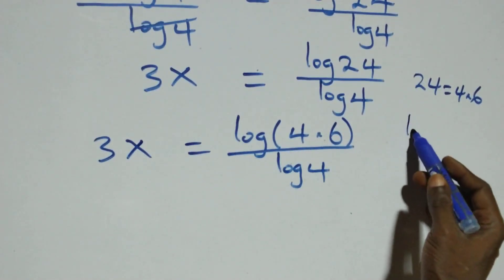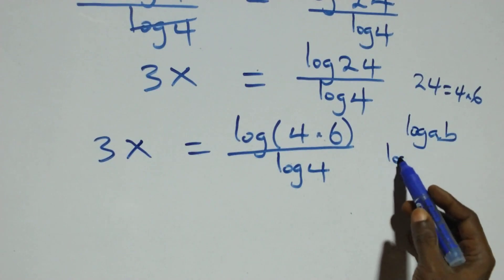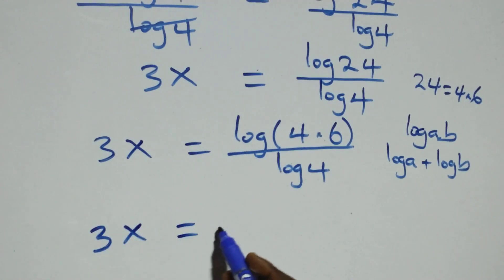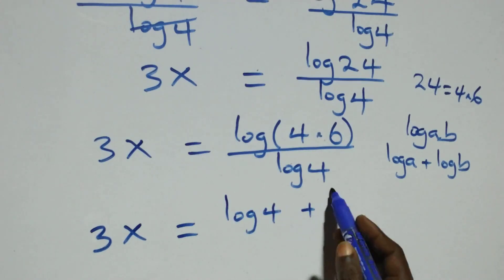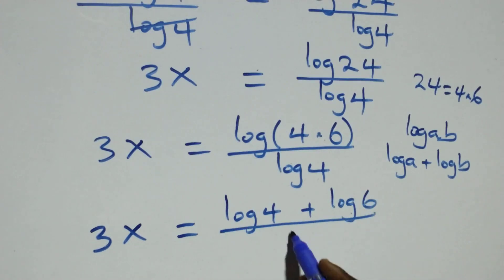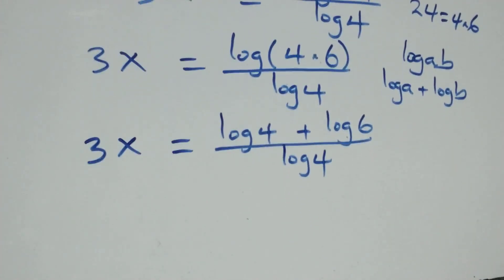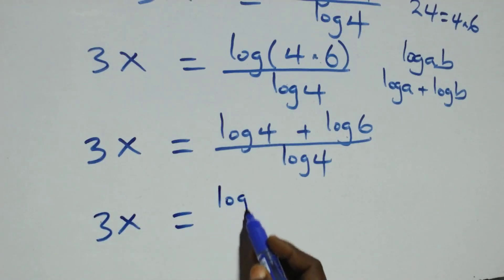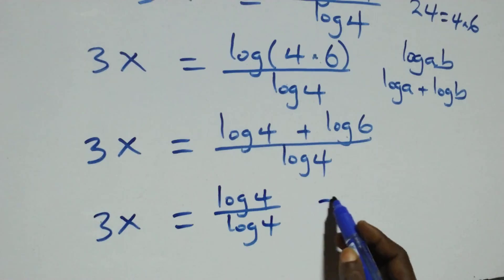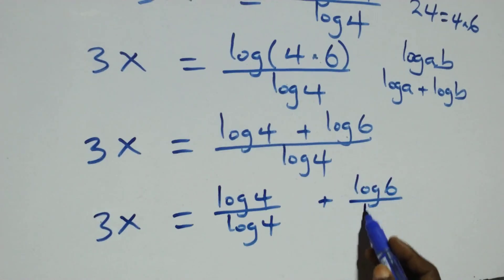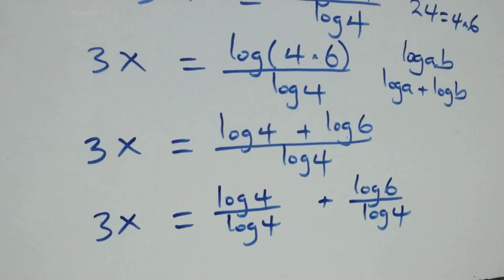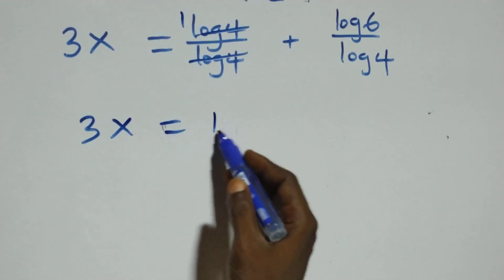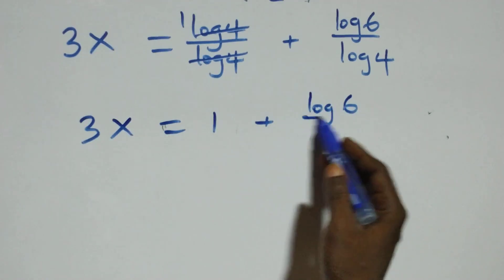This follows the log rule: log of a times b is the same thing as log a plus log b. So what we have becomes 3x equals log 4 plus log 6, all over log 4. We then separate this into two fractions: 3x equals log 4 over log 4 plus log 6 over log 4. Log 4 over log 4 cancels to give 1, so 3x equals 1 plus log 6 over log 4.